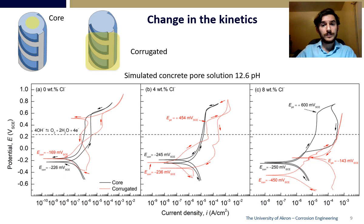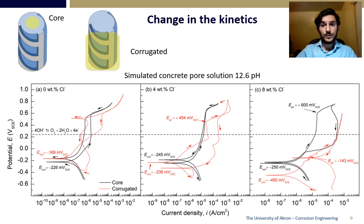To prove the higher corrosion susceptibility of martensite, cyclic potentiodynamic polarization curves were made at three chloride concentrations. As the chloride content increased, the pitting potential decreased for the corrugated area, while the core did not change until 8 weight percent was reached. Even more, the core was able to repassivate at this high chloride concentration; however, the corrugated section was not, even at 4 weight percent. This showed the high dissolution rate due to the martensite formation.